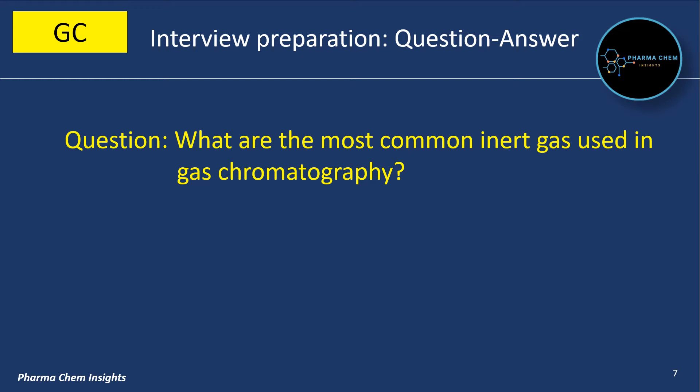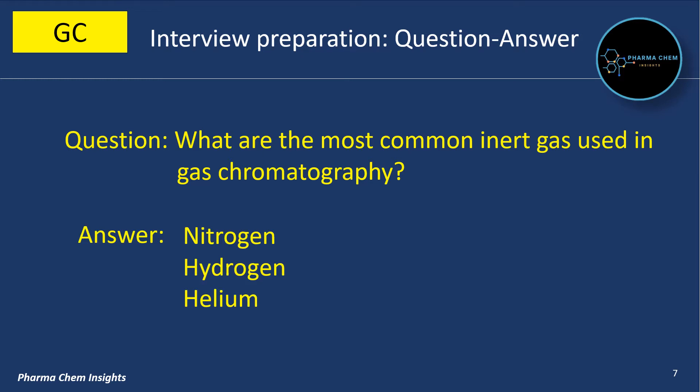Next question: What are the most common inert gases used in gas chromatography? The most common inert gases used in gas chromatography are nitrogen, hydrogen, and helium.